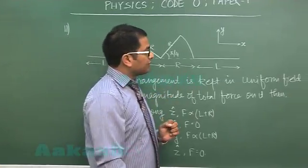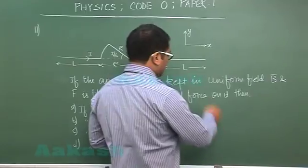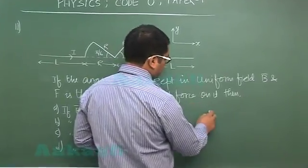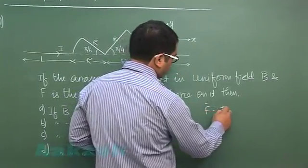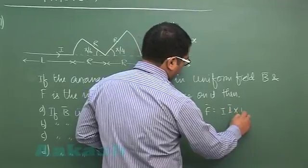Clearly the question is on a very easy note because if magnetic field is constant we know F vector would be I L cross B.